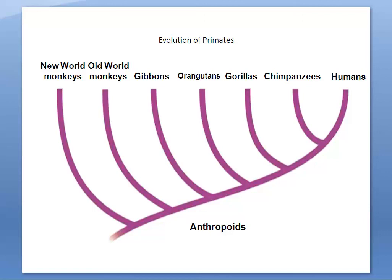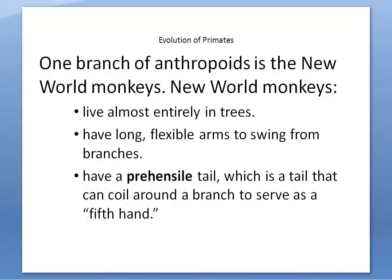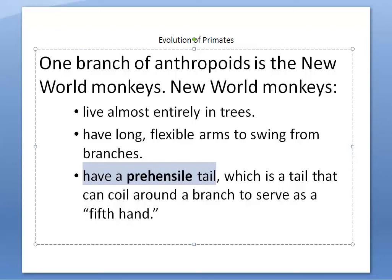The different types of anthropoids include new world monkeys, old world monkeys, and then gibbons, orangutans, gorillas, and chimpanzees — which are known as our great apes — plus humans. New world monkeys live almost entirely in trees and have very long, flexible arms to swing from branches. One very important feature they have is a prehensile tail — a tail that can coil around a branch to serve as a fifth hand. The little capuchin monkeys you always see in movies are an example of new world monkeys.